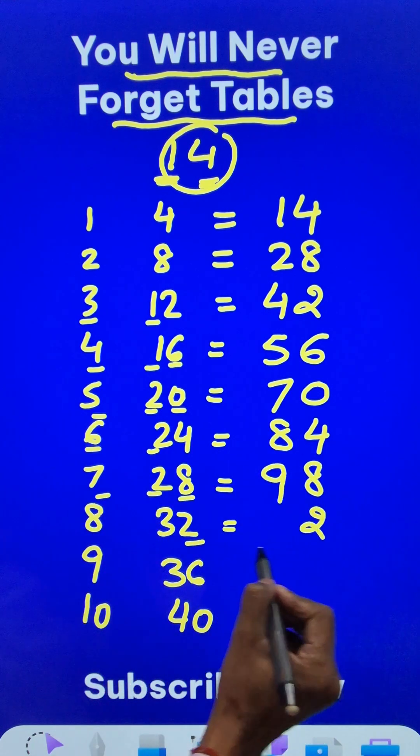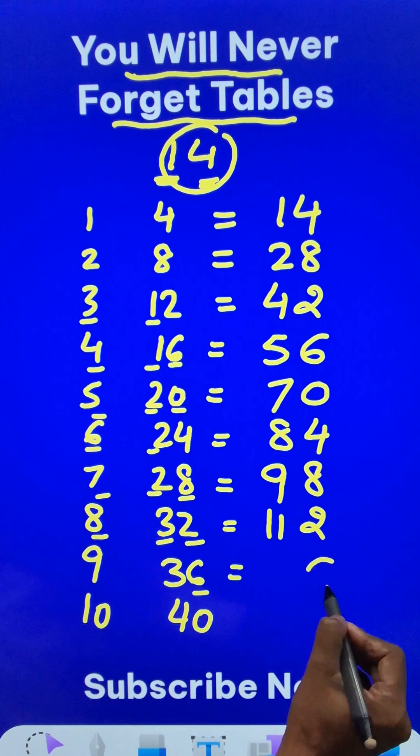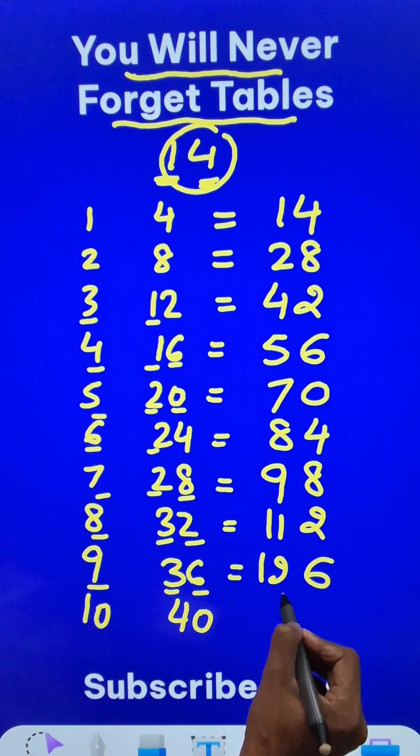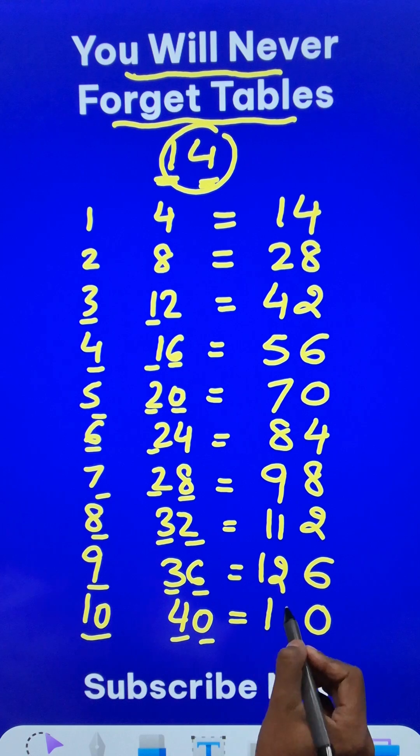Then we have this 2 and 8 plus 3, 11. 6 and then 9 plus 3, 12. And finally the 0 and 10 plus 4, 14.